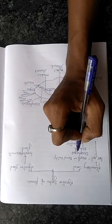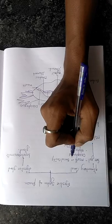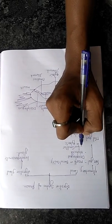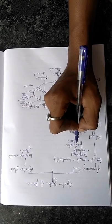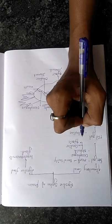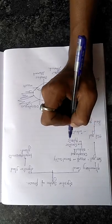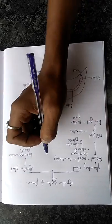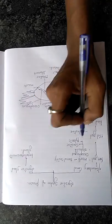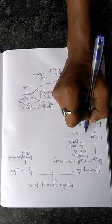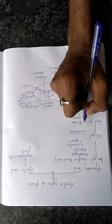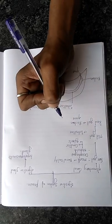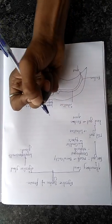The foregut consists of mouth, esophagus, and stomach. The stomach is divided into two parts: cardiac stomach and pyloric stomach. The midgut consists of intestine, and the hindgut consists of rectum and anus.